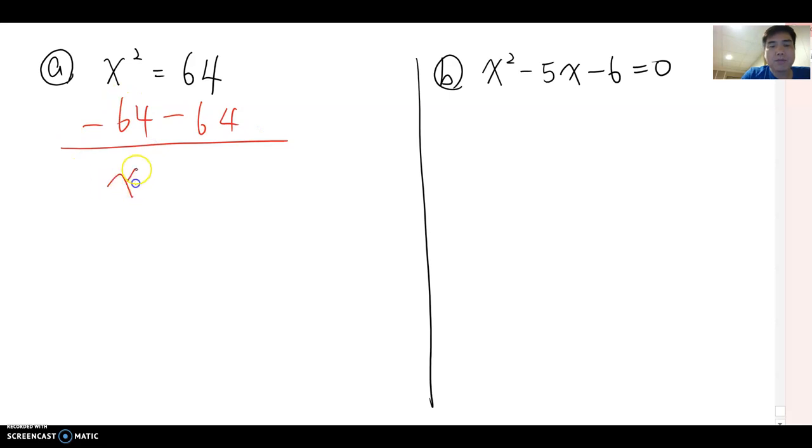I'm going to move 64 to the other side. Then this becomes x squared minus 64 equals 0. Now, if I temporarily erase equals 0 here and ask you a factoring of this one, what kind of factoring method do we have to use?